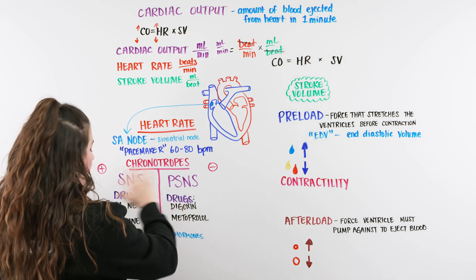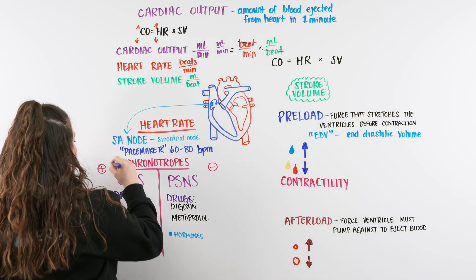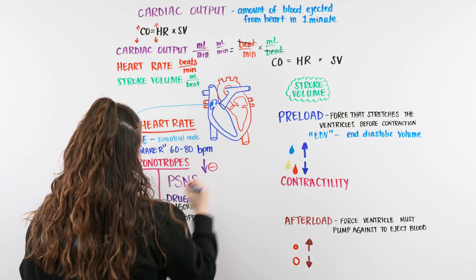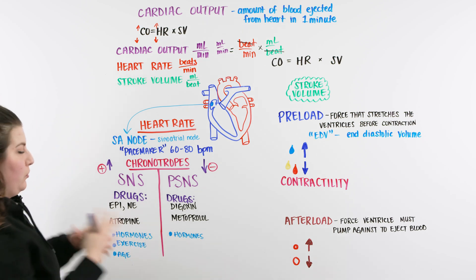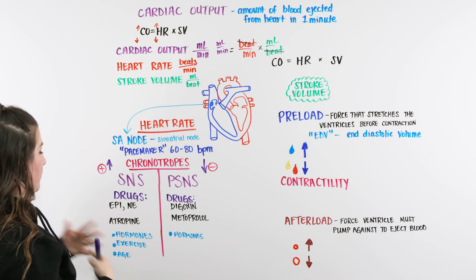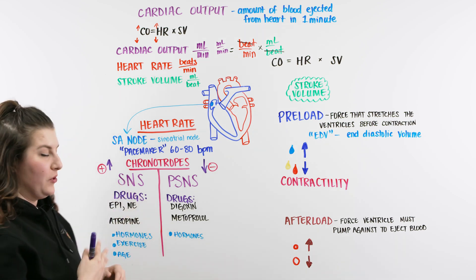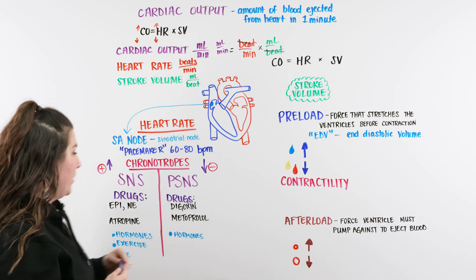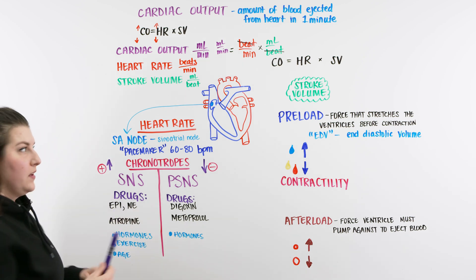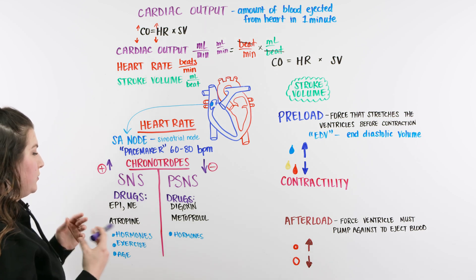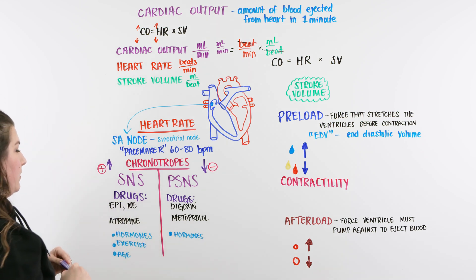Heart rate is determined by chronotropes. There are two types: positive chronotropes, which increase the heart rate, and negative chronotropes, which decrease it. Positive chronotropes include the sympathetic nervous system — when you have that fight-or-flight response, your heart rate picks up, sometimes so high it goes into palpitations and becomes tachycardic. Epinephrine and norepinephrine are positive chronotropes — our body makes them and we can also give them. We can also give atropine, a positive chronotropic drug that raises heart rate — so if someone is bradycardic, we give them atropine and hopefully their heart rate comes up to a normal rate.